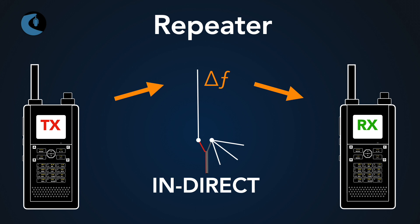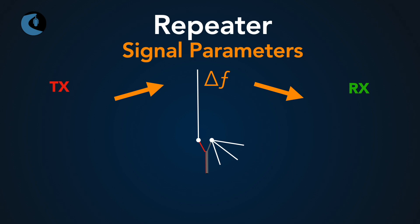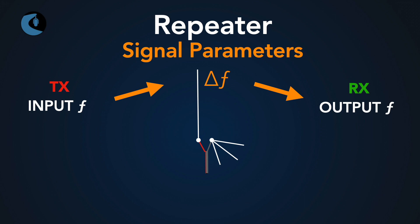In a sense, this is like working split, because you've got two frequencies on the repeater side — the repeater is listening on one frequency and transmitting out on another. On the transmit side, you have an input frequency, and then you have an output frequency, which is what you're listening to on the repeater. These are terms you're likely to see as you start building your code plug.